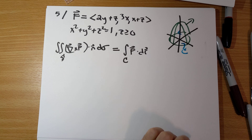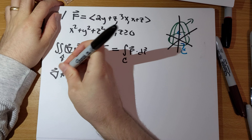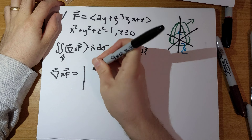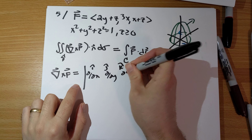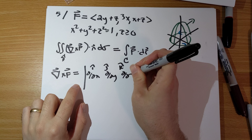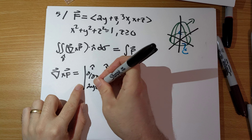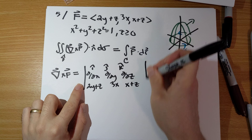What calculations do we need to do? Let's do the surface integral first. We need the curl of F. Setting up the determinant with i-hat, j-hat, k-hat in the first row; d/dx, d/dy, d/dz in the second; and the components 2y plus z, 3x, x plus z in the third row.